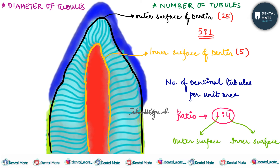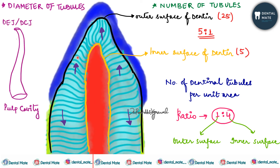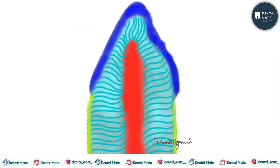Regarding the diameter of the tubules: near the pulp cavity the diameter is larger, whereas at the outer ends it is smaller. In the terminal portion near DEJ or DCJ it is approximately 1 micrometer, whereas it is 3 to 4 micrometers near the pulp cavity. Dentinal tubules are also more numerous in the crown and less numerous in the root.